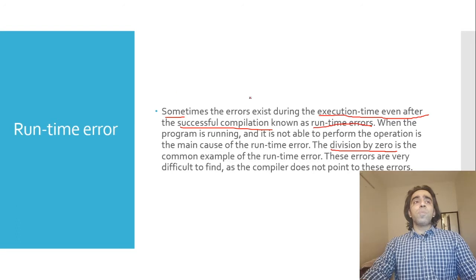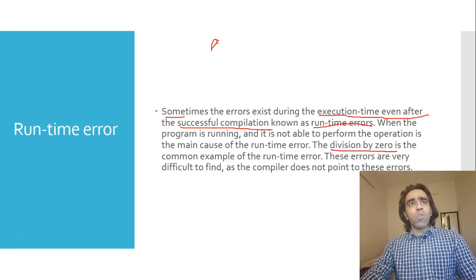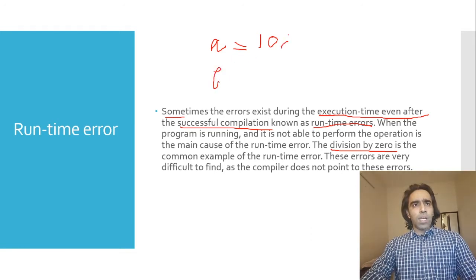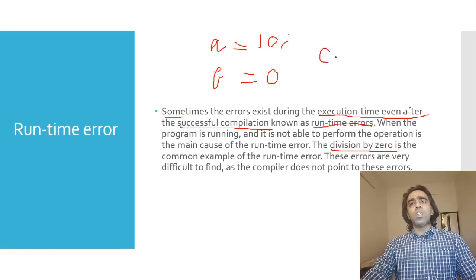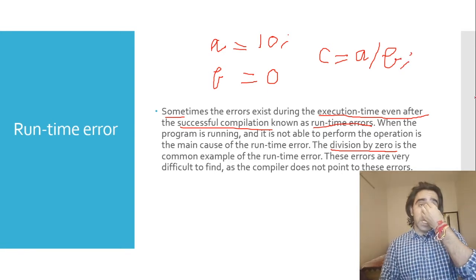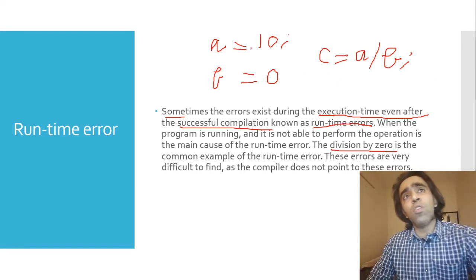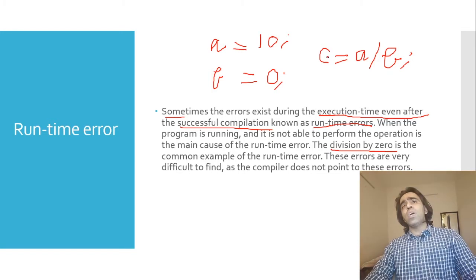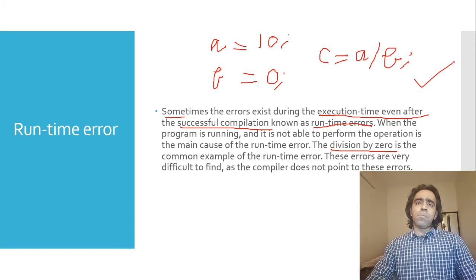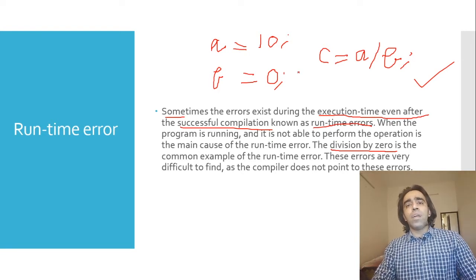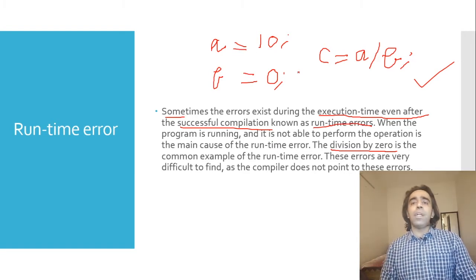For division by zero: suppose we have a = 10; b = 0; c = a / b; — the syntax is correct, so there is no problem at compilation time. But when we run this program, 10 divided by 0 is a math error — we have a runtime error. We cannot divide a number by zero. So here we have a runtime error situation.